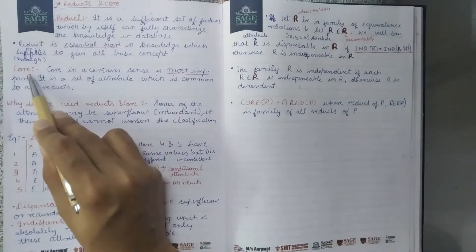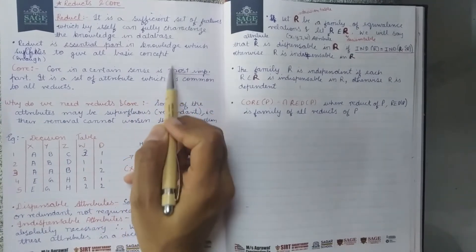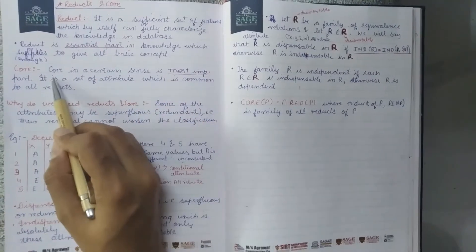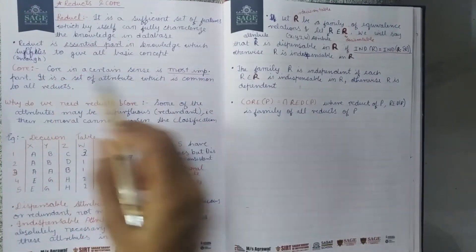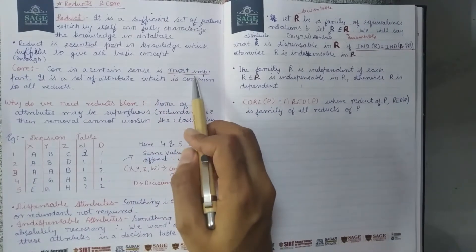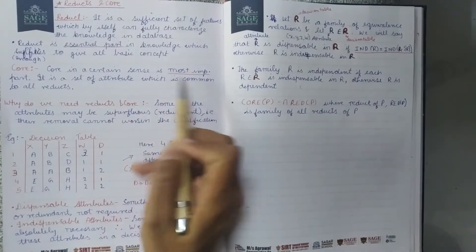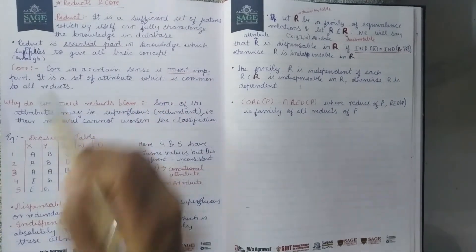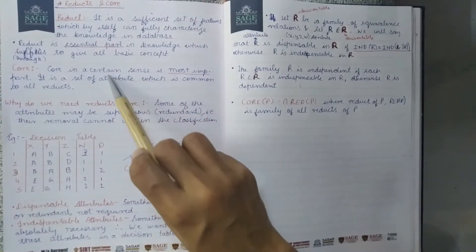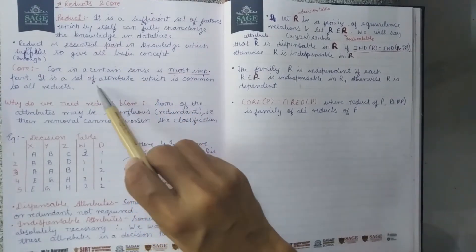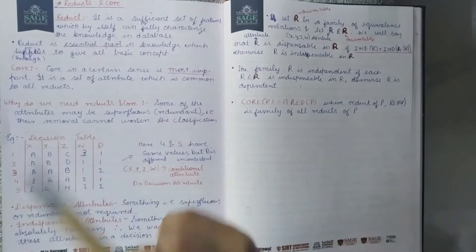What is Core? Core, in a certain sense, is the most important part. Reduct is an essential part and Core is the most important part. Core is a set of attributes which is common to all Reducts — Core will be common in all Reducts.